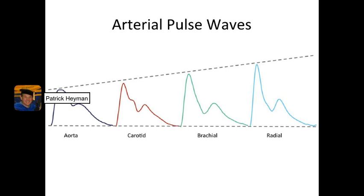In particular, extremely important is this very thick, very wide part of the systolic wave in the aorta. What that's showing is that the aorta is actually stretching open — it's absorbing blood flow — and that's going to prevent a large spike in systolic pressure.